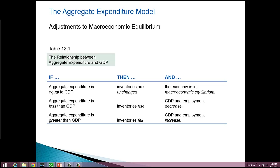Now the third row: if aggregate expenditure is greater than GDP, that means planned inventories are greater than actual inventories — actual inventories have fallen. When that happens, it sends a signal to businesses. They see their warehouses start to empty out, which tells them that spending has increased. They ramp up their production, which increases GDP. And when they ramp up production, they need more people, so they start hiring again.